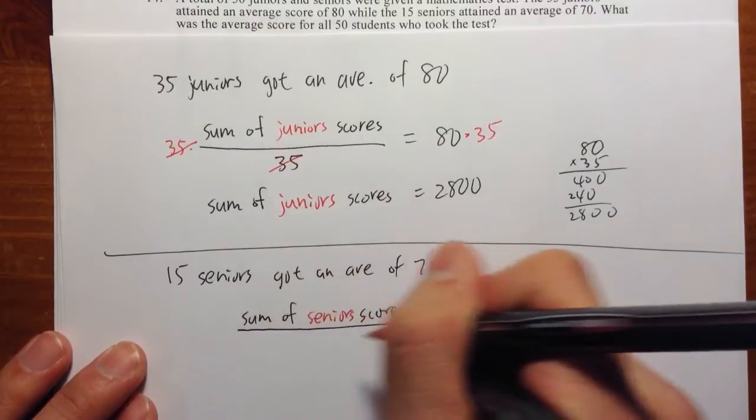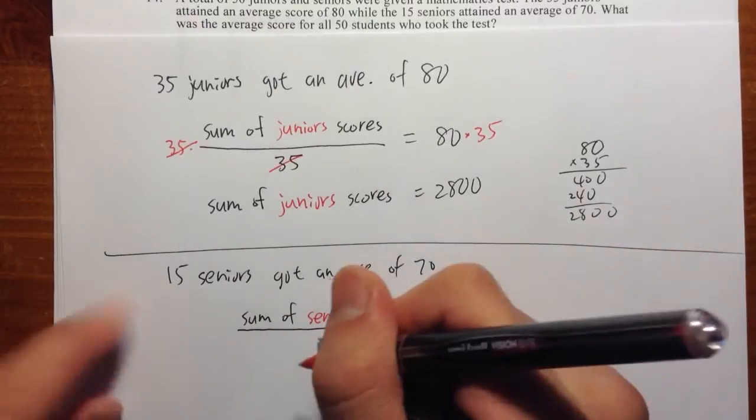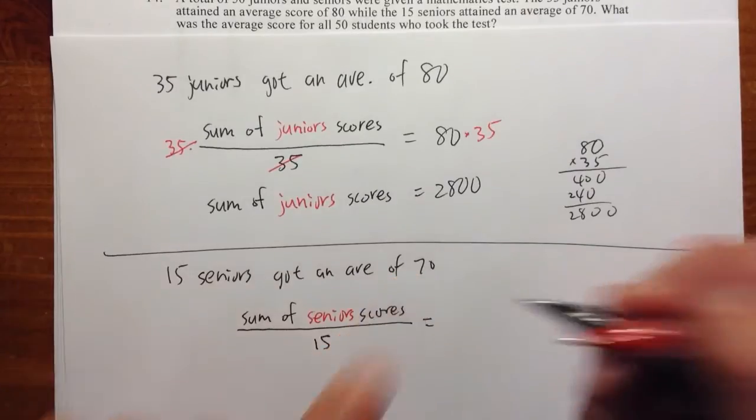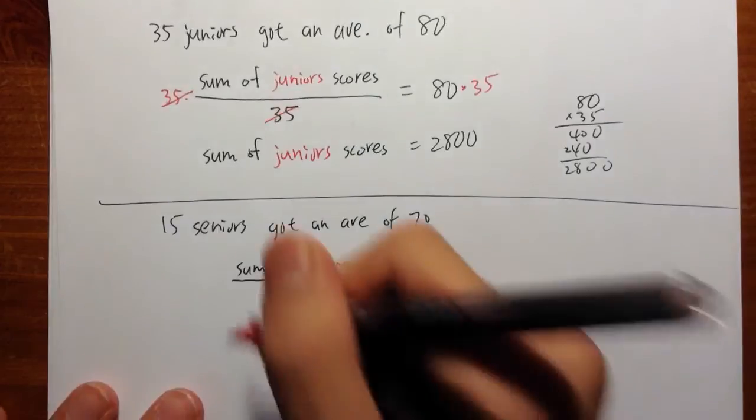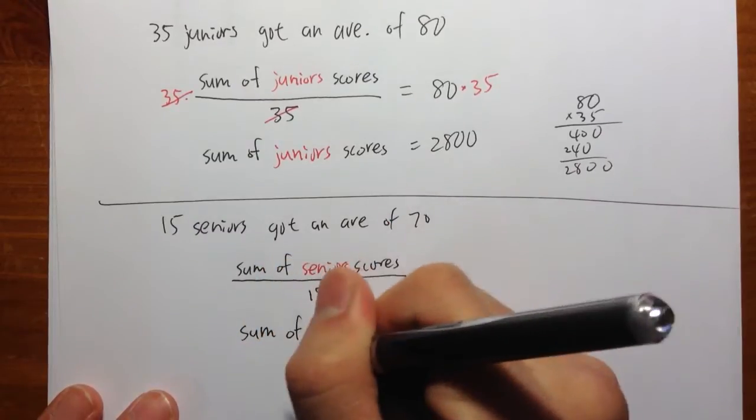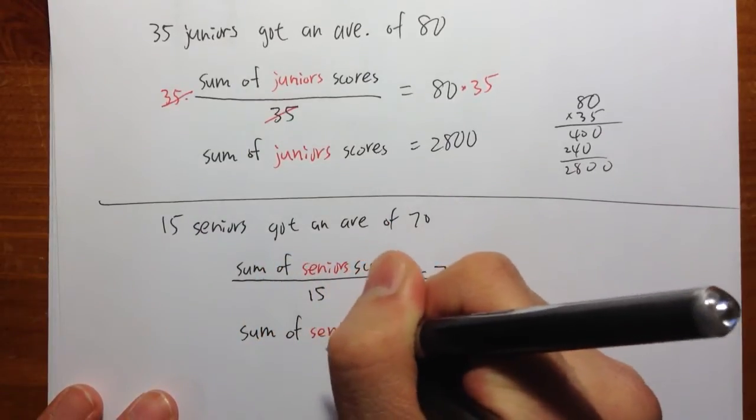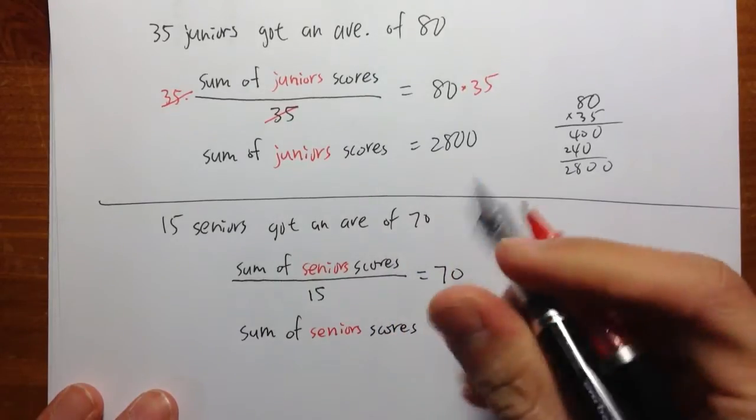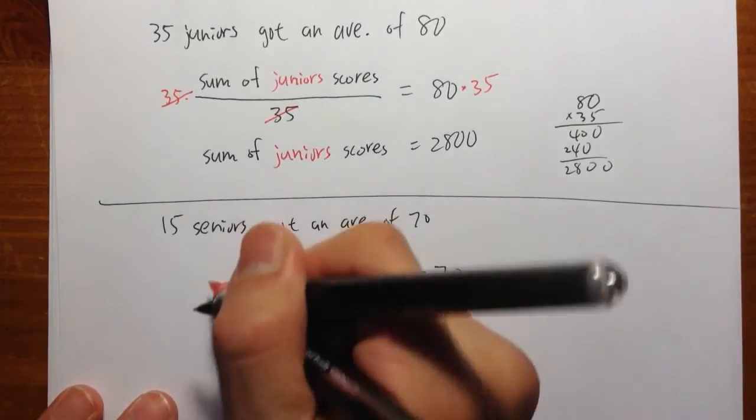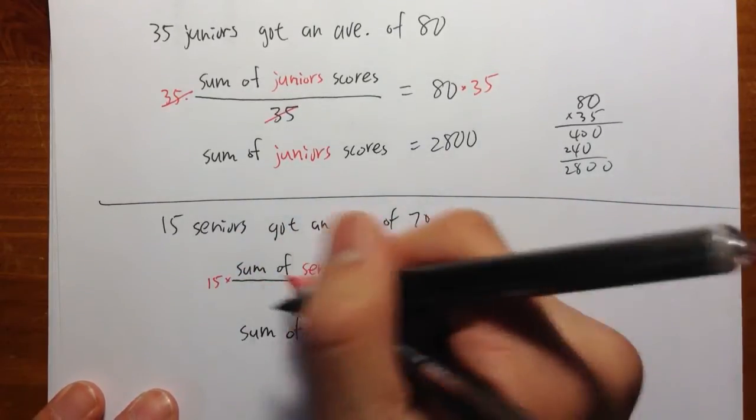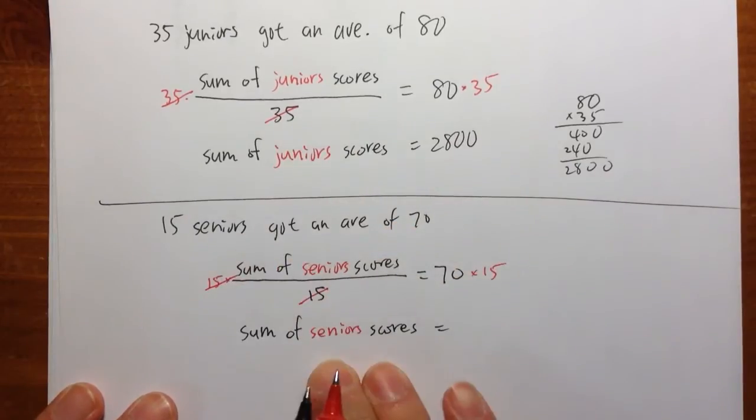And if you divide by 15, you will get the average of 70. So this means the sum of the seniors' scores is equal to, well, to solve this, again, I can just multiply both sides by 15. 15 cancel, that's how we can get this.